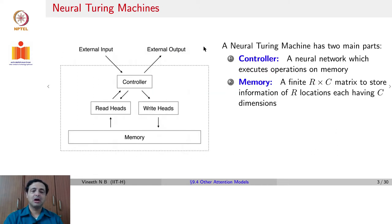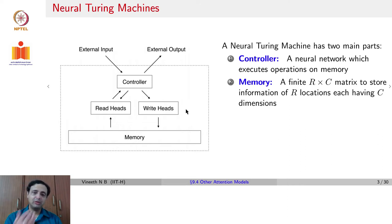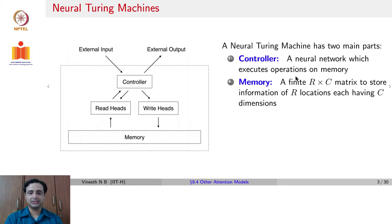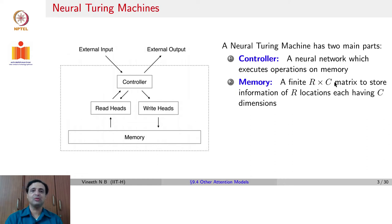Here is a high-level visualization of a Neural Turing Machine, where you have a controller and a memory. The controller accesses the memory using read and write heads to read from and write into the memory. The controller is a neural network with certain layers which executes operations on memory — read and write. The memory itself is an R×C matrix with R rows, each of C dimensions.